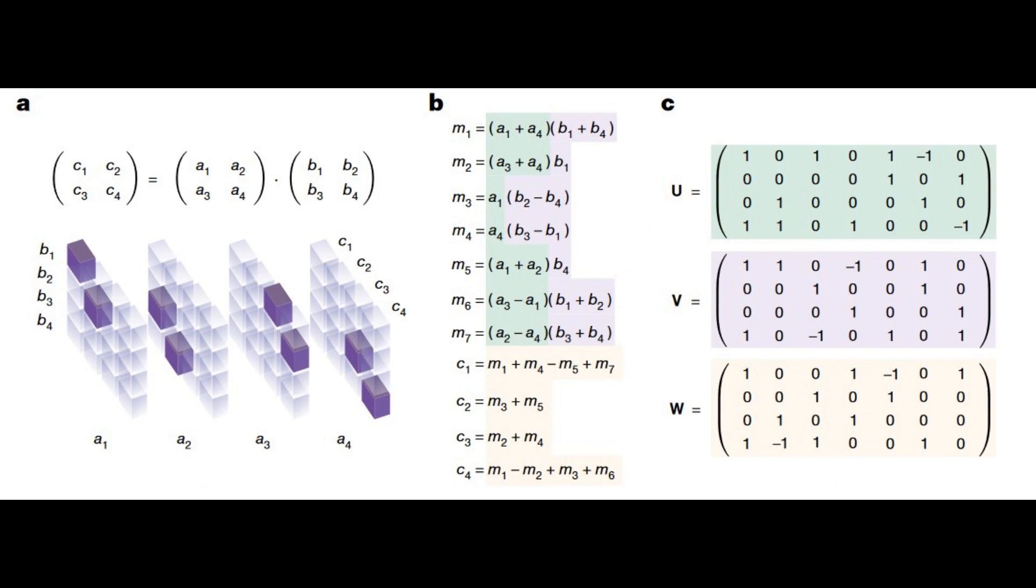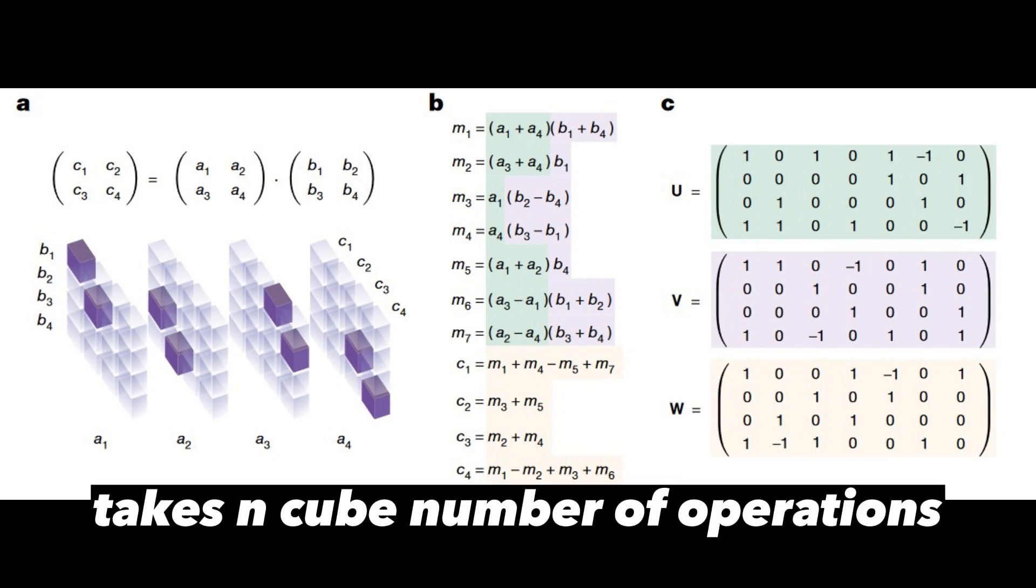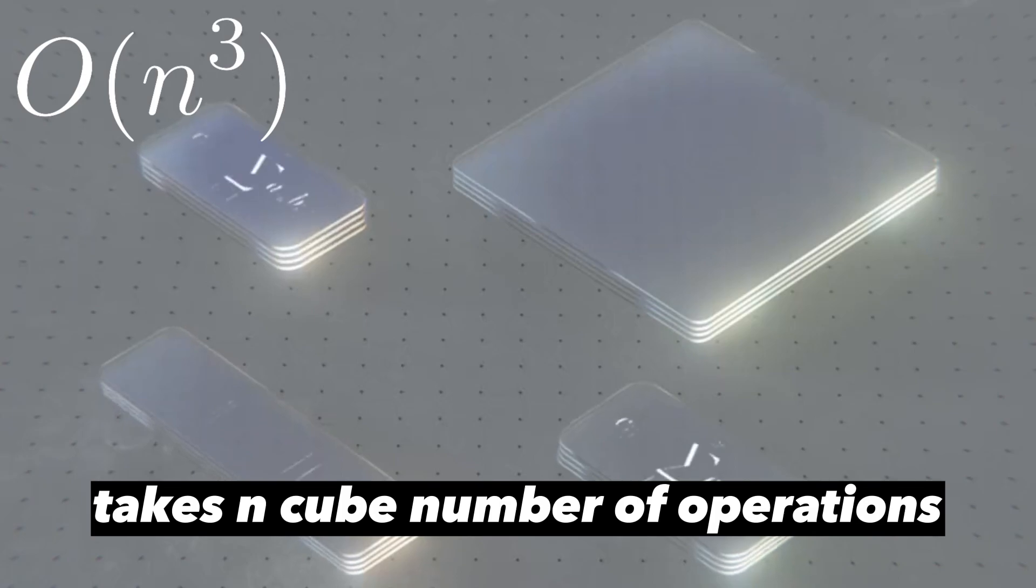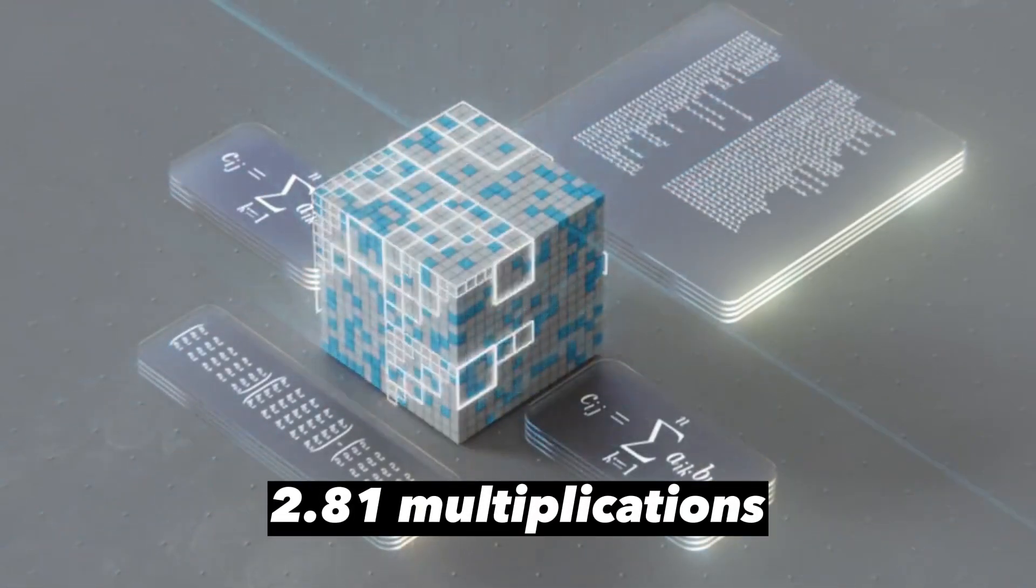In general, to compute the multiplication of two n by n matrices using standard multiplication takes n cubed number of operations. But with Strassen's algorithm you only need n to the 2.81 multiplications.